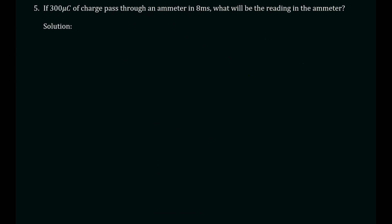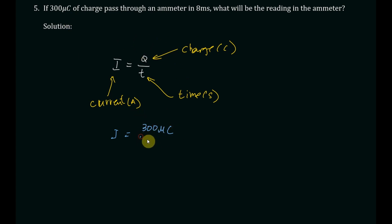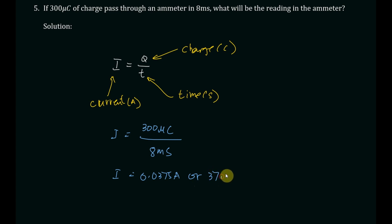Problem number five: if 300 microcoulombs of charge pass through an ammeter in 8 milliseconds, what will be the reading in the ammeter? Current is the rate of flow of charge per unit time, so I equals Q over t, where I is current in amperes, Q is charge in coulombs, and t is time in seconds. Substituting: I equals 300 microcoulombs divided by 8 milliseconds, giving a current of 0.0375 amperes, or 37.5 milliamperes.